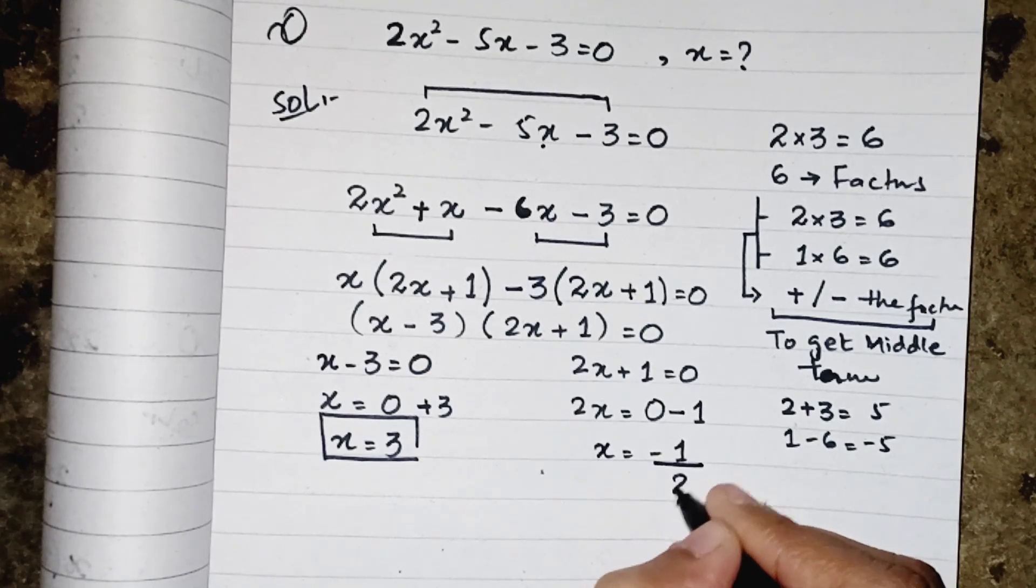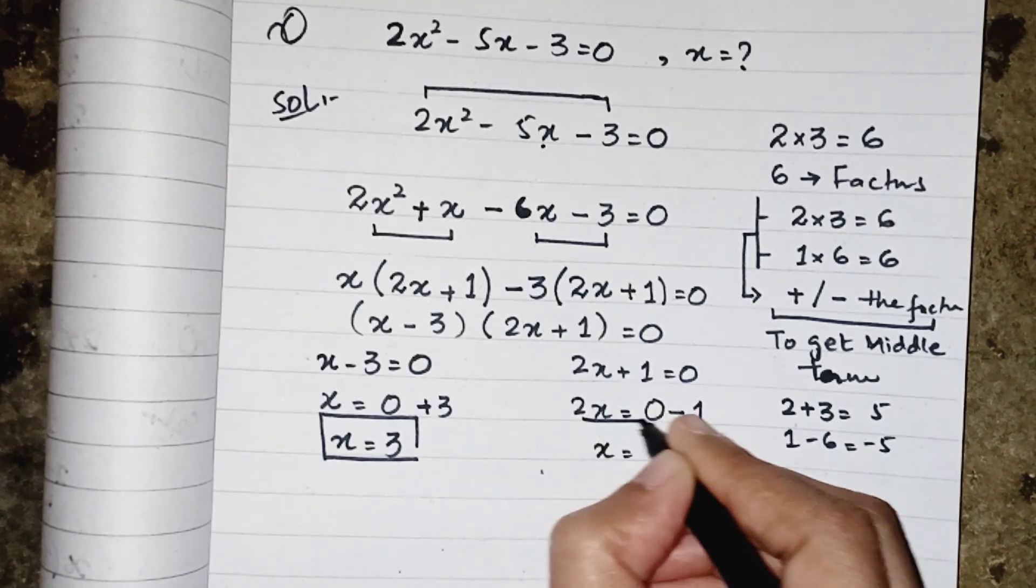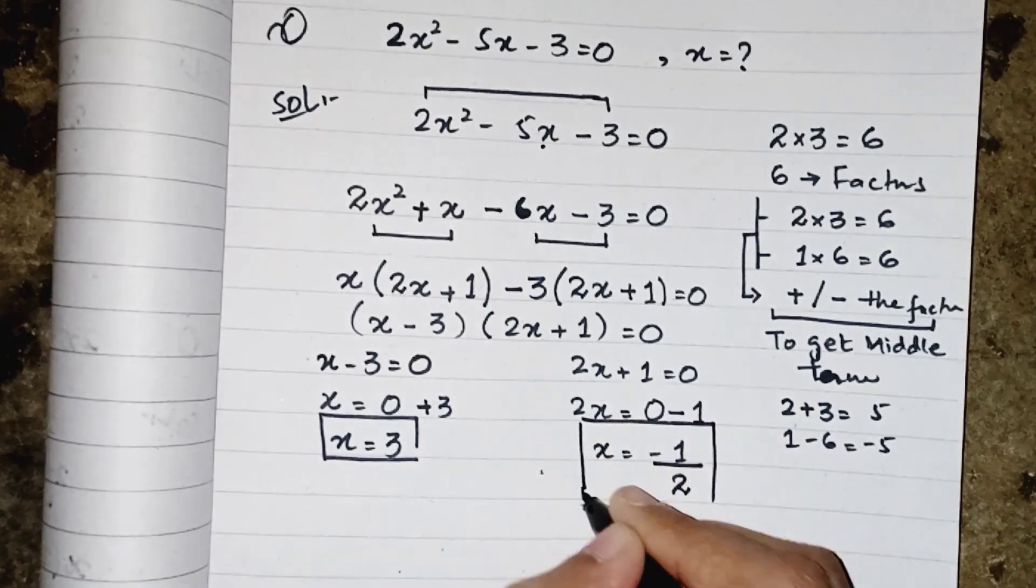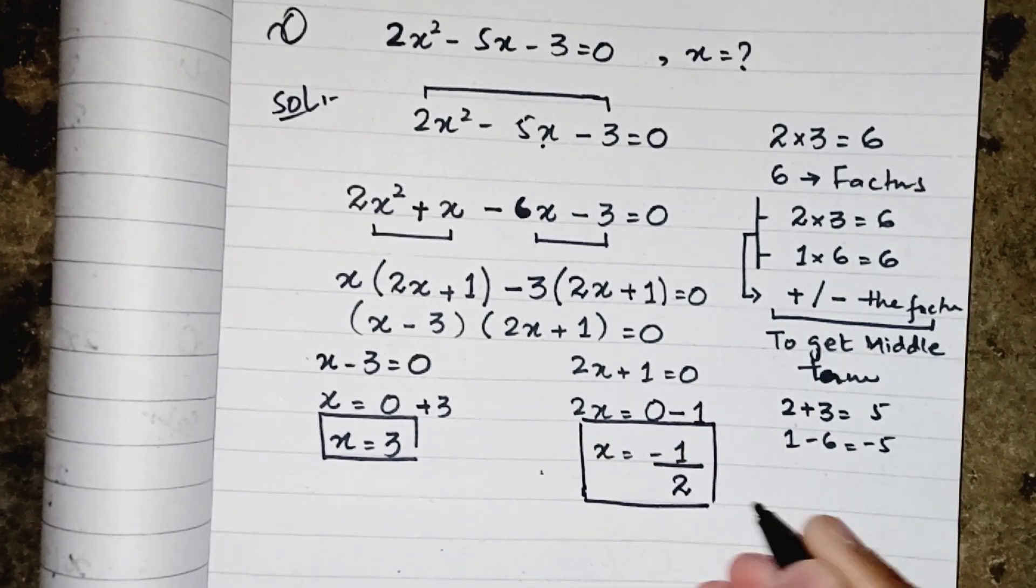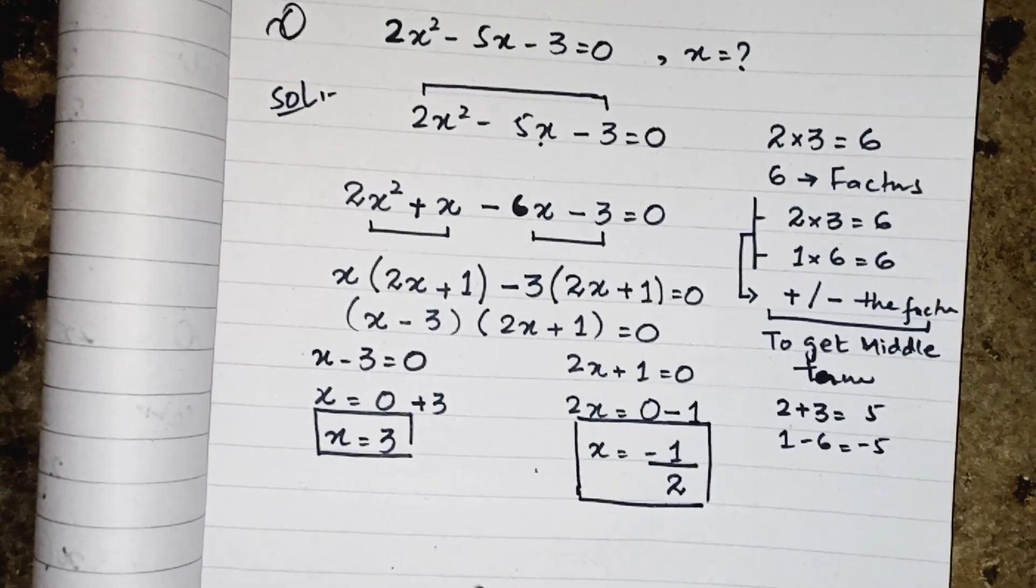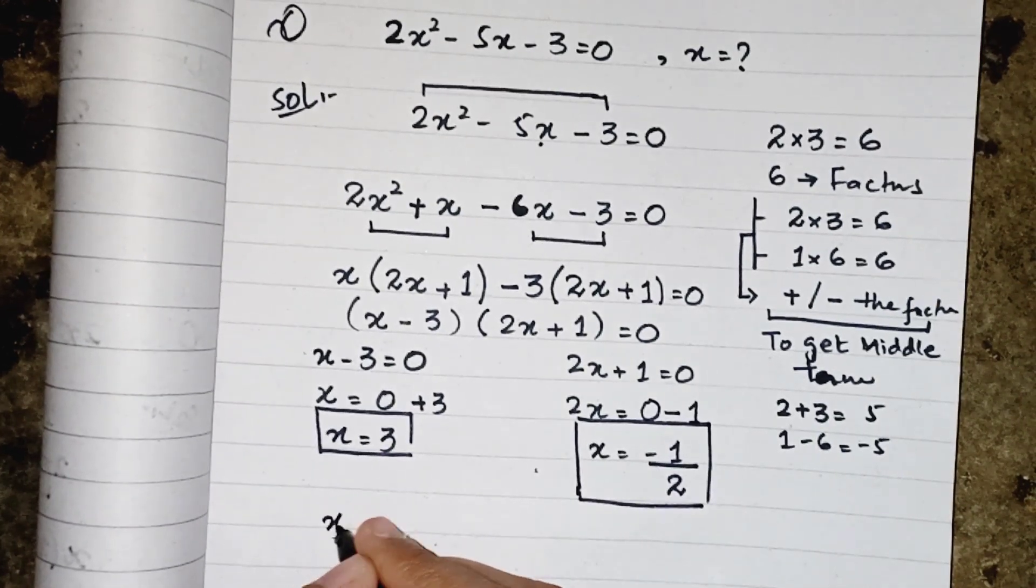2 is multiplying by x, so when we move it to another side of the equation, it will be divided. So it will be minus 1 divided by 2. The values of x are 3 and minus 1 upon 2.